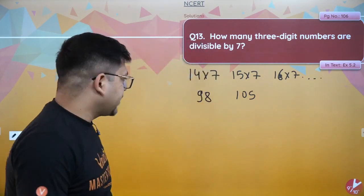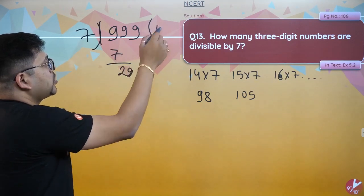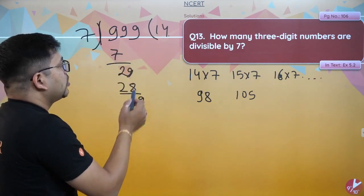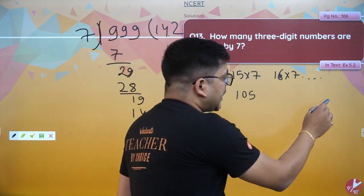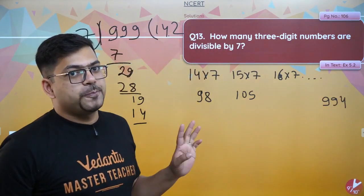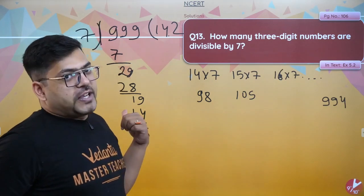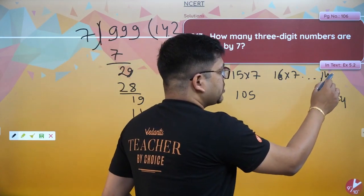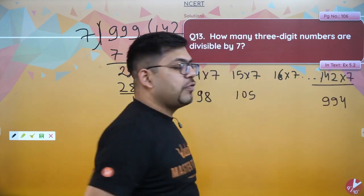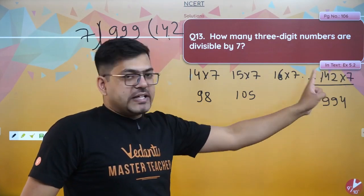And the last multiple which is 994 is divisible by 7. Because 142 into 7 gives 994 — so 5 remains when you divide 999 by 7. So the 142nd multiple of 7 is 994, which is the last 3-digit number divisible by 7. So total 142 multiples of 7 exist up to that point.